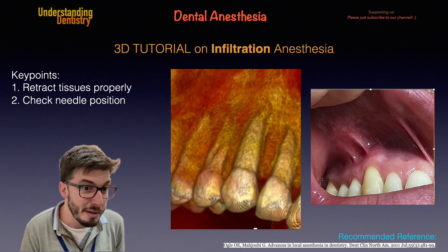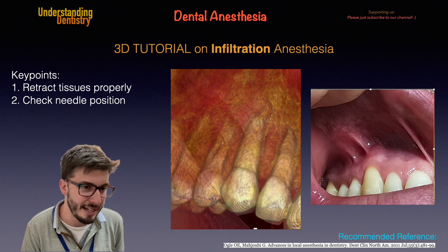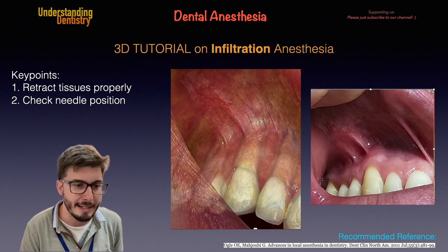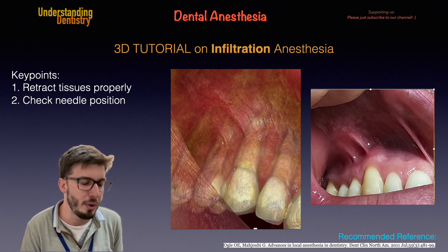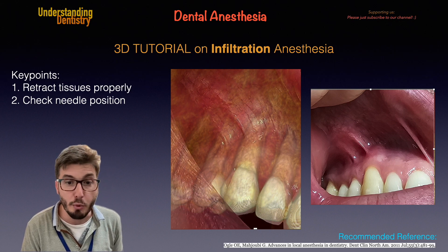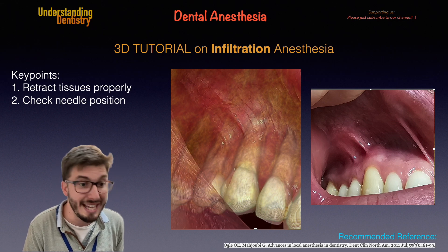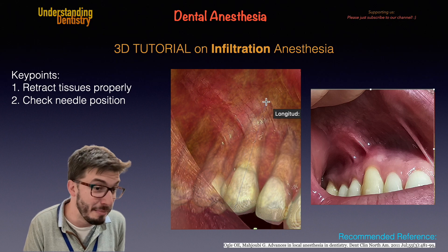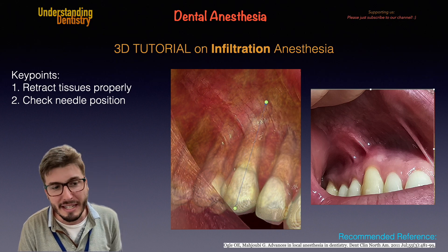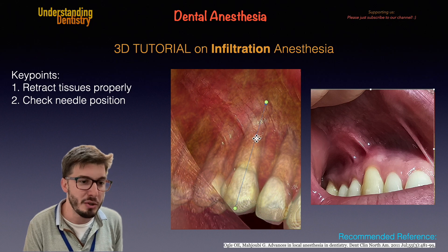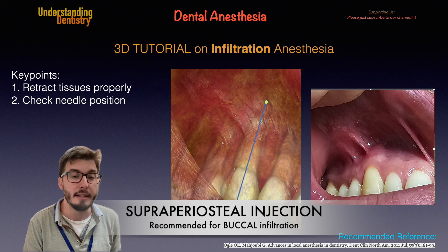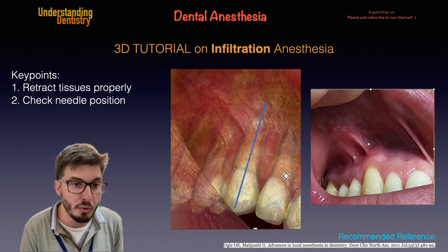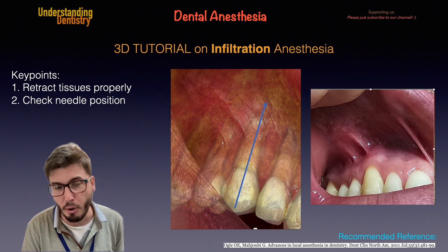In the first video I'm superimposing the CBCT — it's just an example for you to see more or less the location of these roots. As you can see, I have the transparency of the buccal plate, which is why you can see the roots. There will be a buccal plate between the soft tissues and the roots, but it turns out that the buccal plate is porous, so you can release your anesthetic solution in a supraperiosteal anesthesia and it will diffuse across the buccal bone.